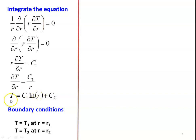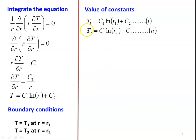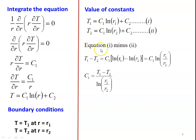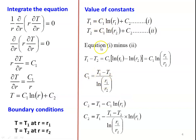Subtracting equation 1 minus equation 2: T1 - T2 = C1·ln(r1) - C1·ln(r2), with C2 cancelling. This gives C1·ln(r1/r2), so C1 = (T1 - T2) / ln(r1/r2). Substituting C1 back into the first equation: C2 = T1 - C1·ln(r1) = T1 - [(T1 - T2)/ln(r1/r2)]·ln(r1). We now have the values of C1 and C2.